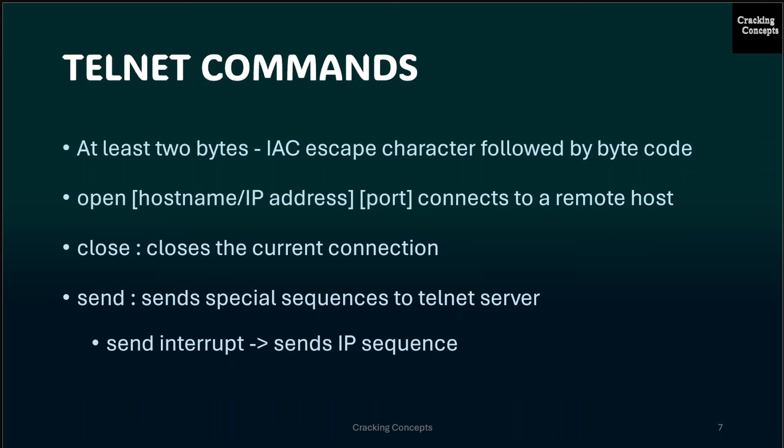Now we will look into some of the Telnet commands. Telnet commands consist of at least two bytes. The first byte is the IAC escape character, which is typically byte 255, followed by the byte code. One example is the Telnet command, where the first byte is the host name or IP address followed by the port number — this will connect to a remote host. The port is optional and defaults to 23, the standard port for Telnet.